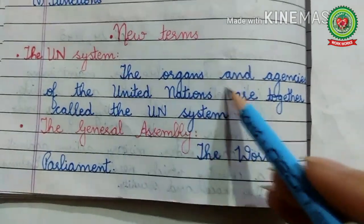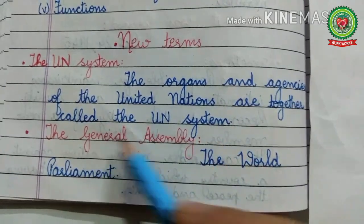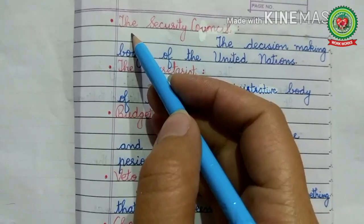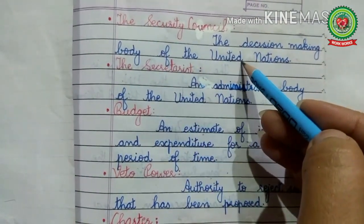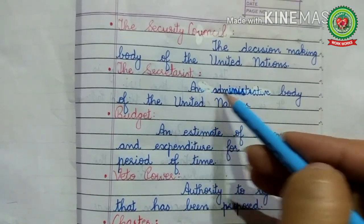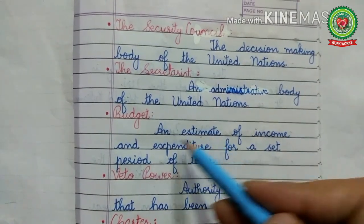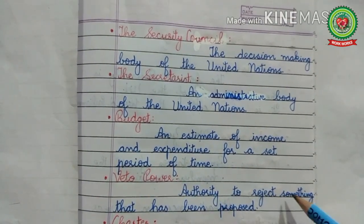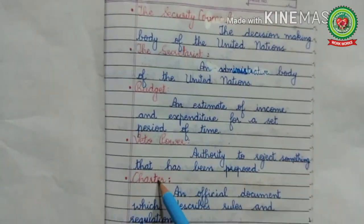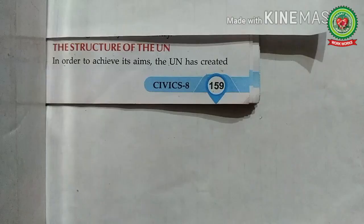Before discussing these organs, let us discuss the new terms related to today's topic. The UN system: the organs and agencies of the United Nations are together called the UN system. The General Assembly: the world parliament. The Security Council: the decision-making body of the United Nations. The Secretariat: the administrative body of the United Nations. Budget: an estimate of income and expenditure for a set period of time. Veto power: authority to reject something that has been proposed. Charter: an official document which describes rules and regulations.